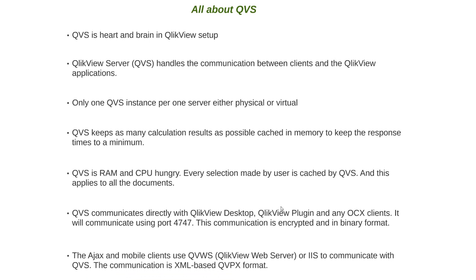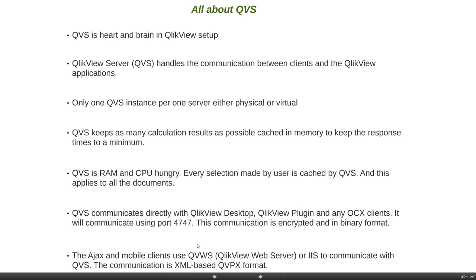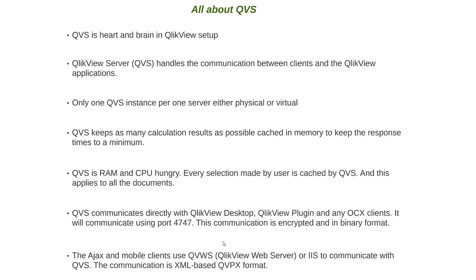Ajax and mobile clients use QVWS or IIS to communicate with QVS. If you access the application via the Ajax client, the Ajax client pushes the request to the web server, which in turn pushes it to QVS. The first leg of communication between the client and the web server happens via HTTP or HTTPS if certificates are implemented. The second leg of communication happens via the QVPX protocol. If all users report they cannot access ClickView applications, look at the QVS service first. In the next lesson we'll look at QDS.